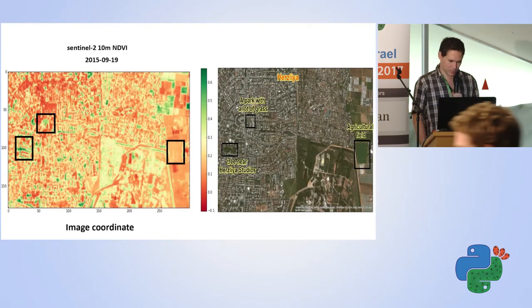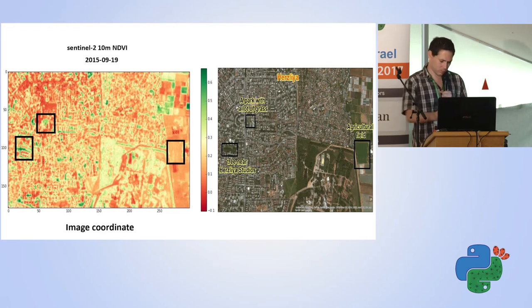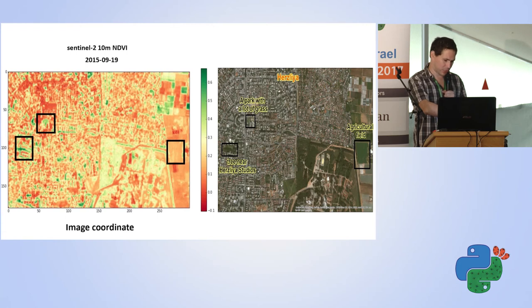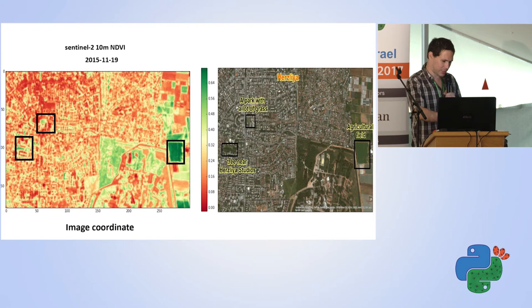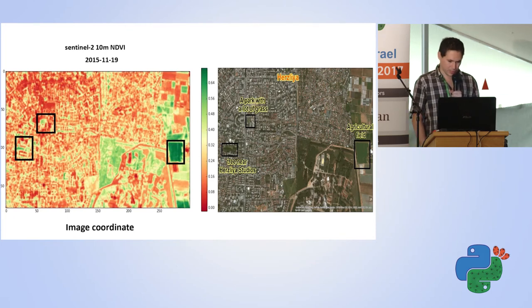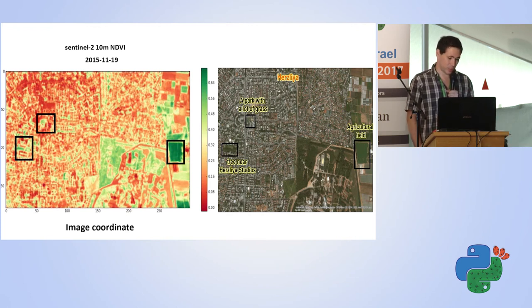In this NDVI map from the satellite image, you can see that it is not the same date, but that is to illustrate the concept. In one area you see a field with no NDVI at all. In the city you see two zones: one with near-zero NDVI and one green area which is a park with a lot of grass. In a different date you can see the NDVI change. Outside the city, NDVI changes because someone started growing crops on the field. Inside the city vegetation changes less because it is maintained by humans.